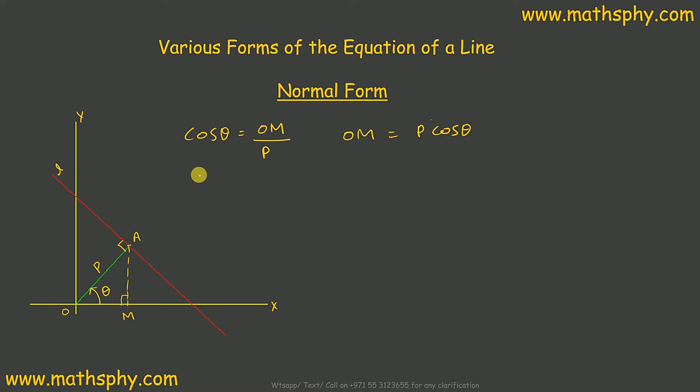If I write here value of sin theta, this would be AM over P—opposite over hypotenuse. In this case, AM will be equal to P sin theta.